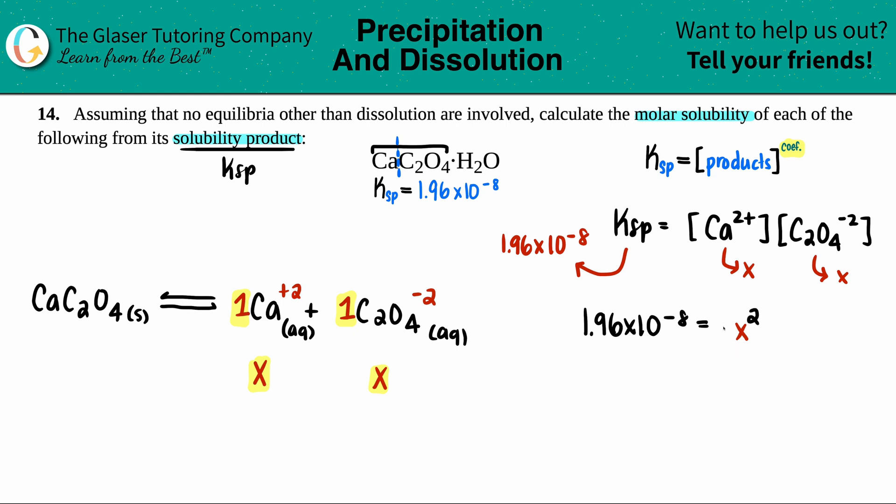And then just solve for X. X squared, the inverse is doing the square root. So this one's pretty easy. We love these one-step math problems.